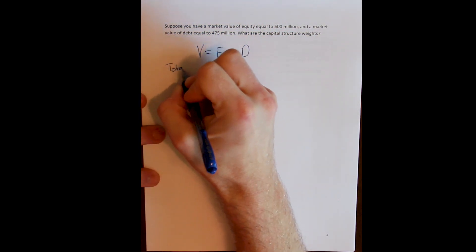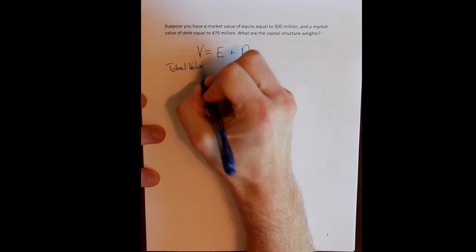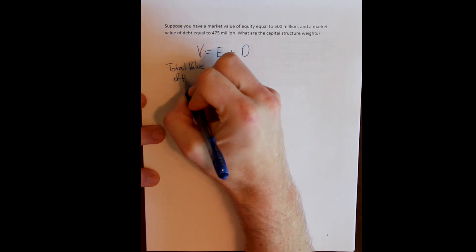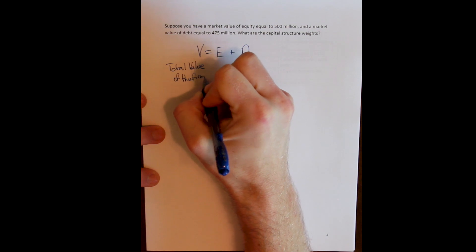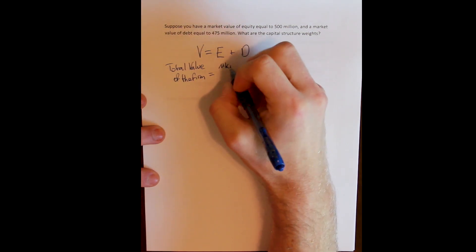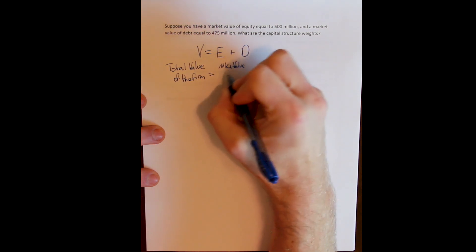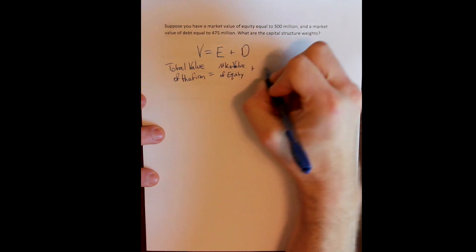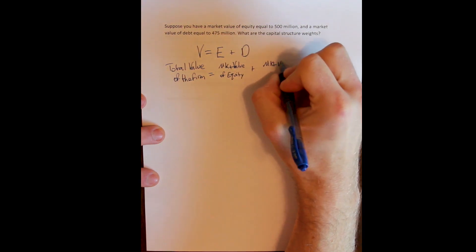So we can write that out and say the total value V of the firm is equal to the market value of the firm's equity plus the market value of the firm's debt.